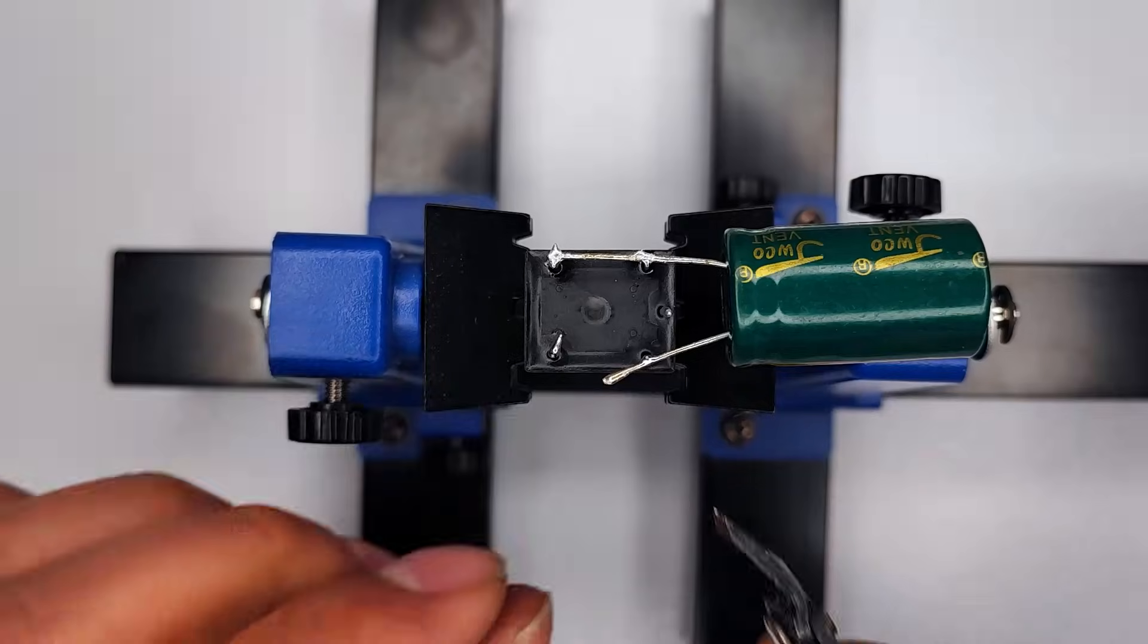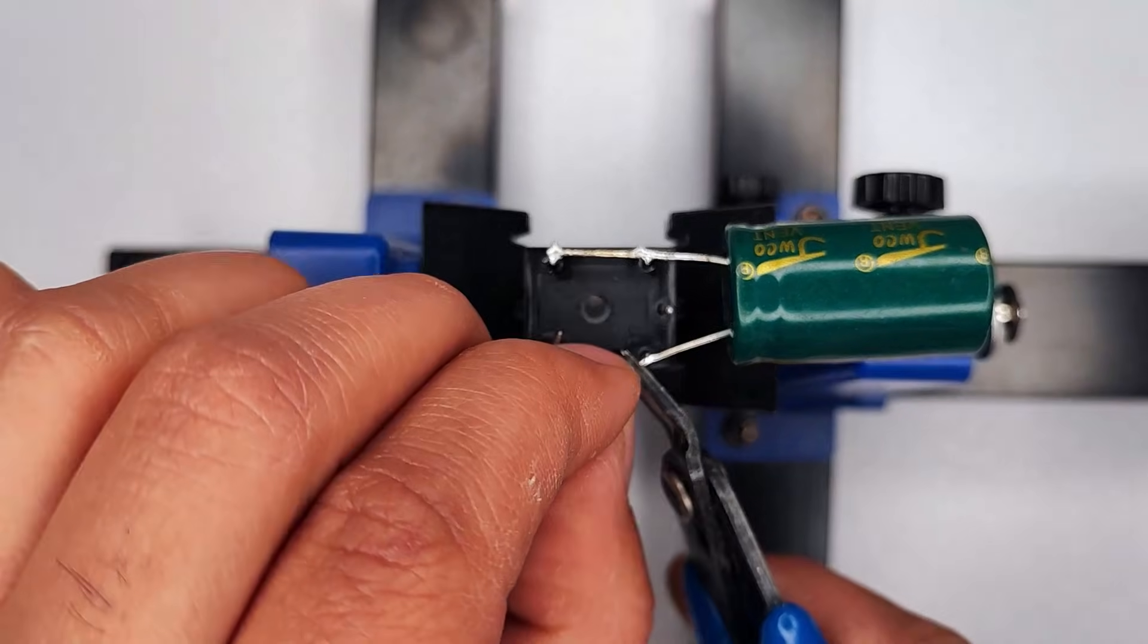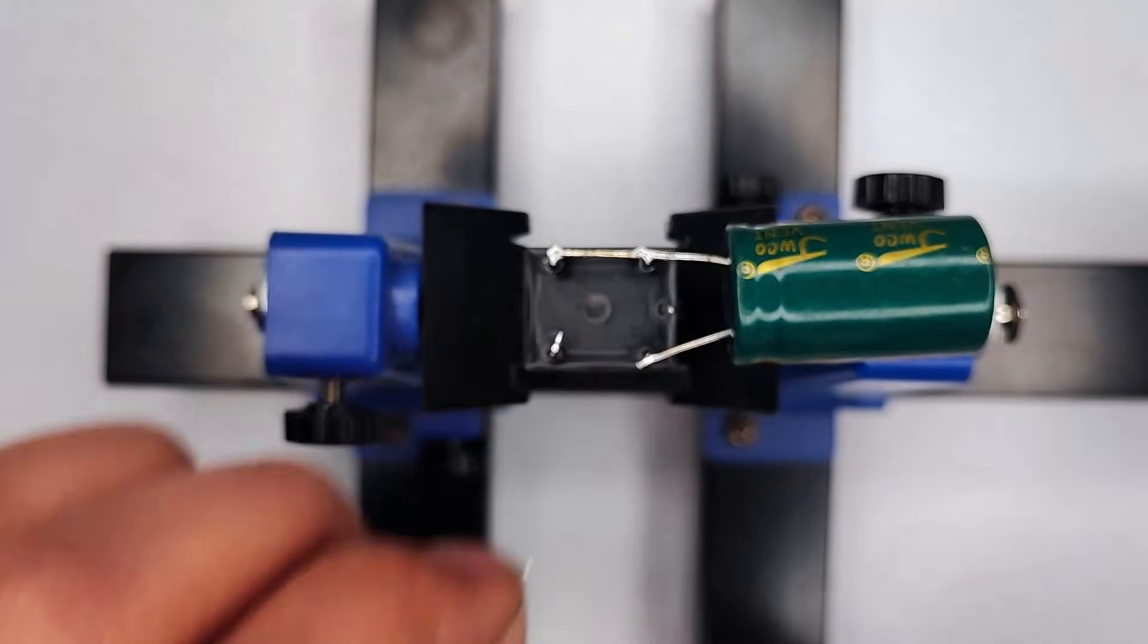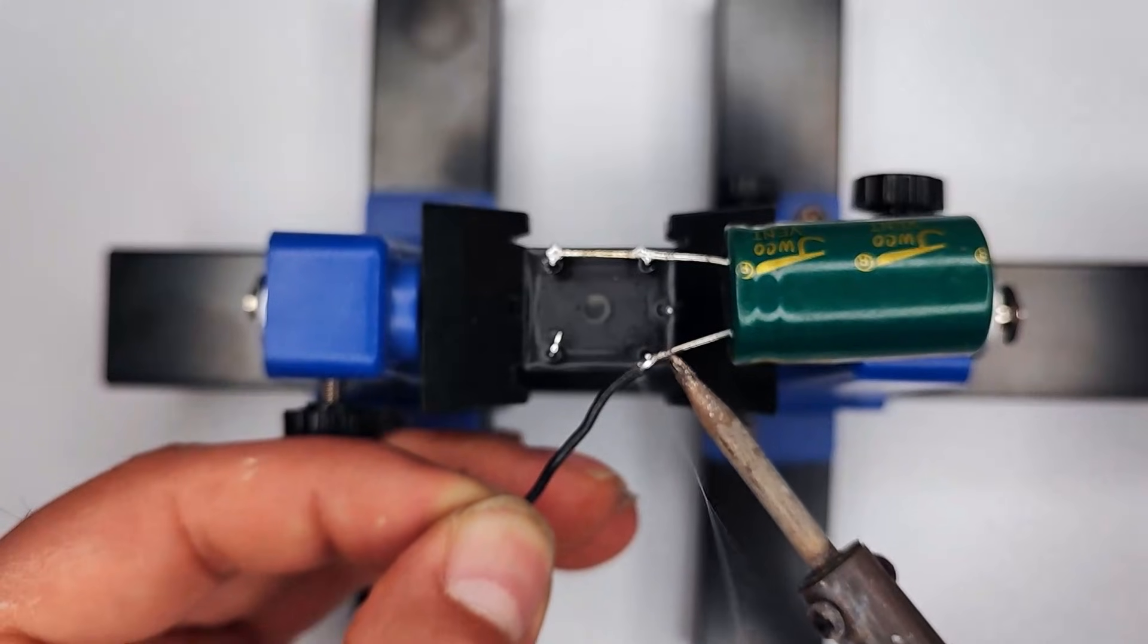Works with any 12-volt load, LED, buzzer, lamp, whatever. Easy to modify, bigger capacitor equals slower blink, smaller capacitor equals faster blink.